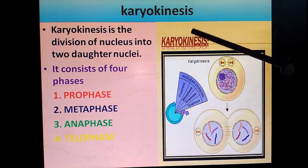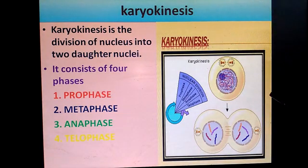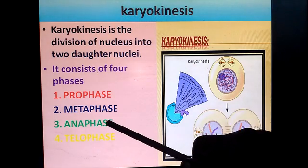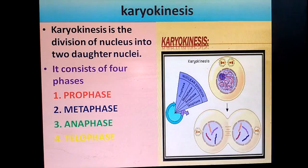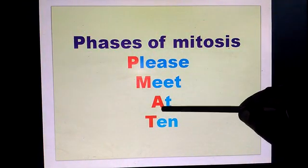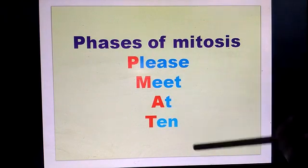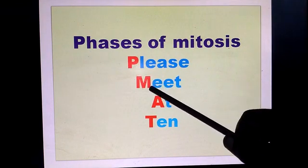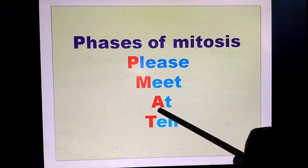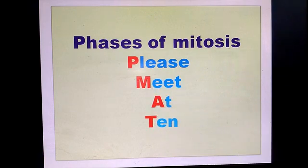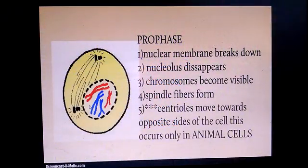Karyokinesis, or nucleus division, consists of four stages. They are prophase, metaphase, anaphase, and telophase. A simple mnemonic: P for prophase, M for metaphase, A for anaphase, and T for telophase.